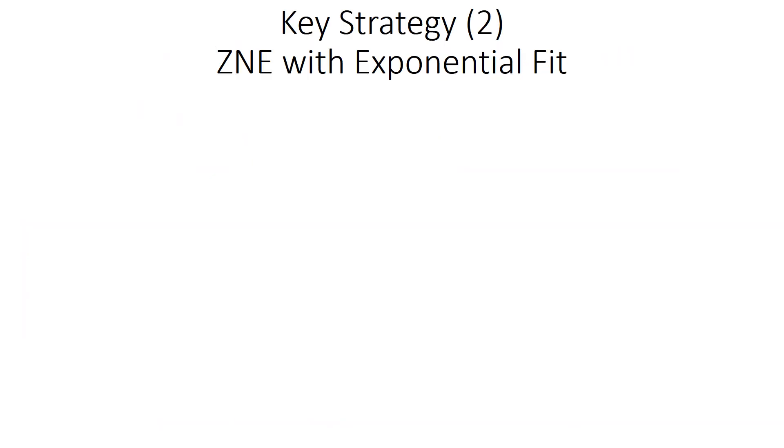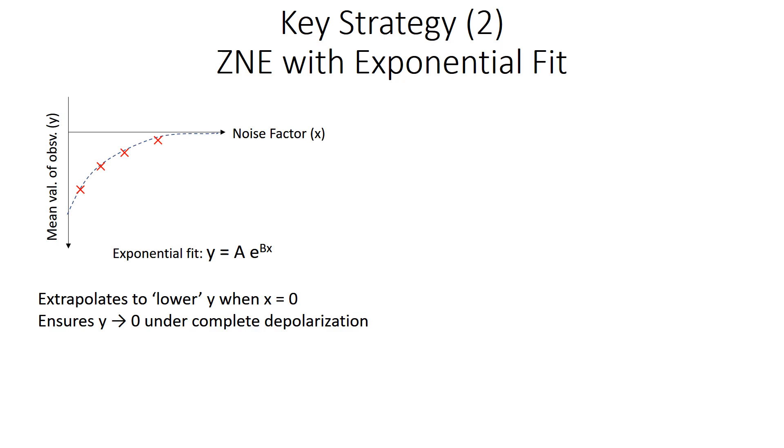The other part of the strategy was to combine the exponential fit with the zero noise extrapolation noise mitigation scheme. The exponential fit helps push down the value of the mean value of an observable Y, which in our case is the ground state energy. And it is more realistic because under complete depolarization, the mean value of an observable should approach zero.